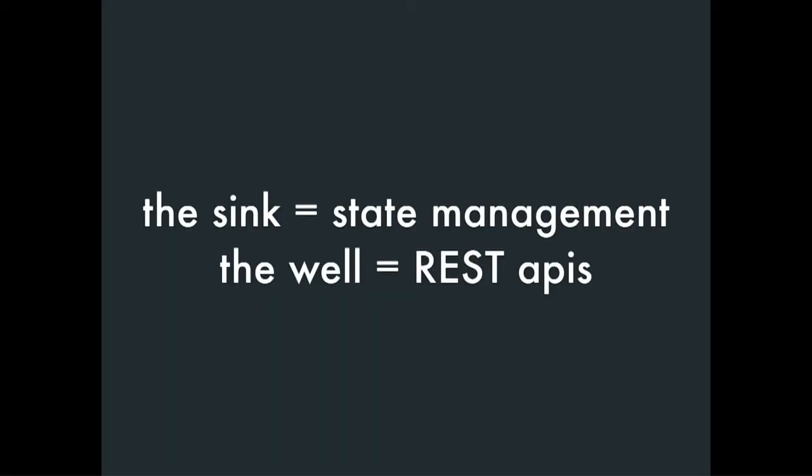So, the problem is we were fixing the sink instead of fixing the well. The sink would be state management, and the well would be the REST API. So, instead of fixing where and how we get the data from, we were actually fixing how we manage that data at the state management level with libraries like Redux, MobX, and so on. That was our mistake.